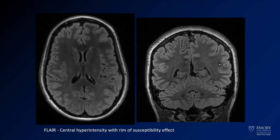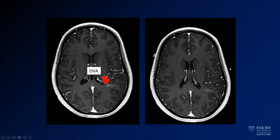Here you see the FLAIR images: on the left inferior frontal lobe there is this lesion that is centrally T2 hyperintense with a rim of dark signal on T2, which represents susceptibility from old blood products or hemosiderin. You see the same thing on the coronal image. On the post-contrast image, there is a branching linear area of enhancement — that's the developmental venous anomaly associated with this lesion — which strengthens our diagnosis that this is a cavernoma.